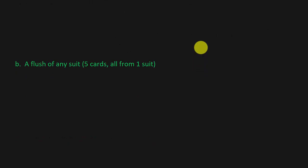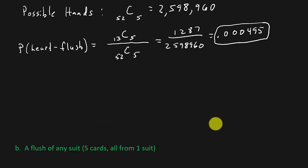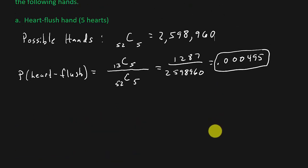Now let's look at a flush of any suit. This is going to be similar to the problem we just worked. You might be thinking — and if you are, you're correct — we could just take this probability and multiply it by 4, and that would give you the answer. Because we found the probability of a heart flush, but we want to know the probability of a heart flush, or a spade flush, or a club flush, or a diamond flush. It can be all diamonds, all hearts, all spades, or all clubs. That's a flush.